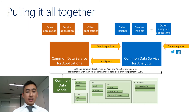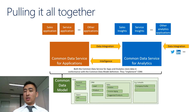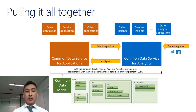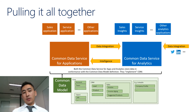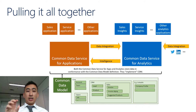Pulling it all together: at the bottom we have the Common Data Model, which includes accounts, teams, and around 54 entities in total — essentially a stripped-down version of XRM. Above that is the Common Data Service underpinning the model. Then there's the solution or app-based offering: first-party apps by Microsoft such as Sales, Service, and Marketing, as well as ISVs able to build their apps on top of this platform.